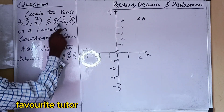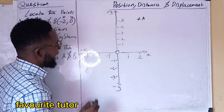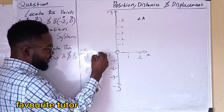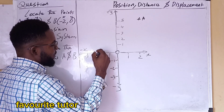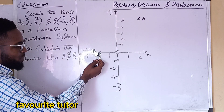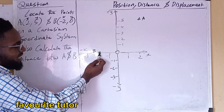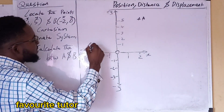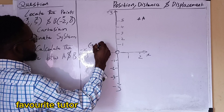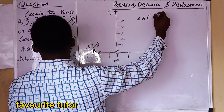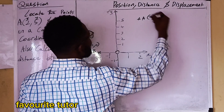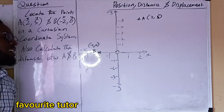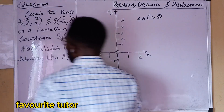For point B, x is minus 2 and y is 0. x is minus 2 — go to the negative side, minus 2. And y is 0, so we remain here. This is point B: x is minus 2 and y is 0. So we have located both points using the two-dimensional coordinate system.